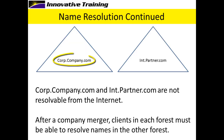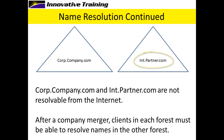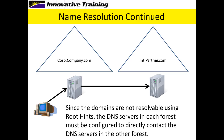Let's suppose we have two companies. corp.company.com and int.partner.com are not resolvable from the internet. But the two companies merge and now clients in each forest must be able to resolve names in the other forest. Since the domains are not resolvable using root hints, the DNS servers in each forest must be configured to directly contact the DNS servers in the other forest.